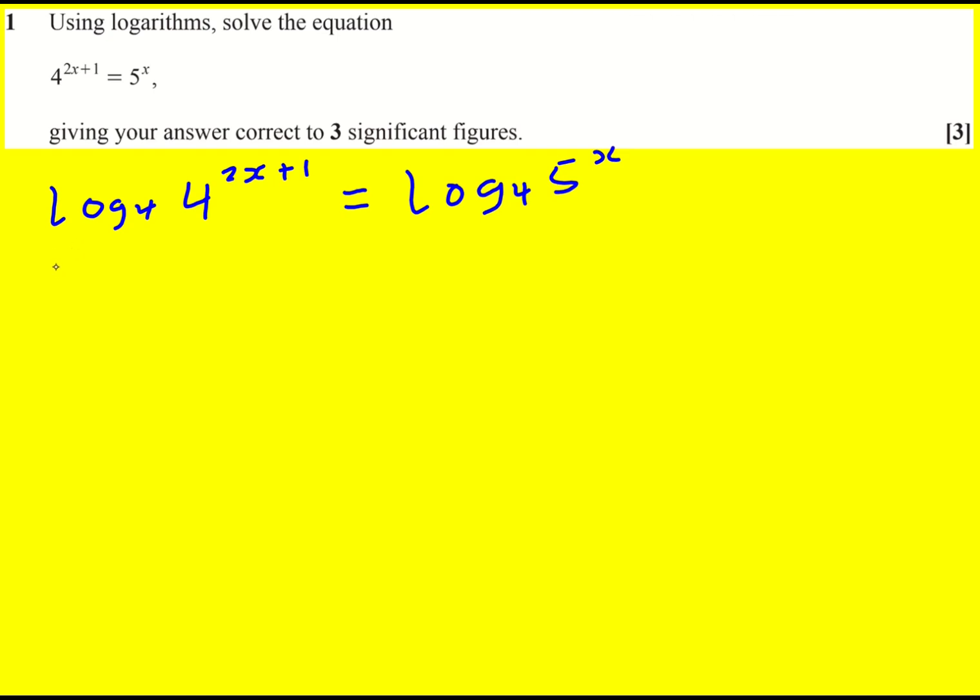Because when you bring the 2x plus 1 down over here, you actually get log to base 4 of 4 which is just 1, so it disappears. Then over here we've got x log to base 4 of 5.